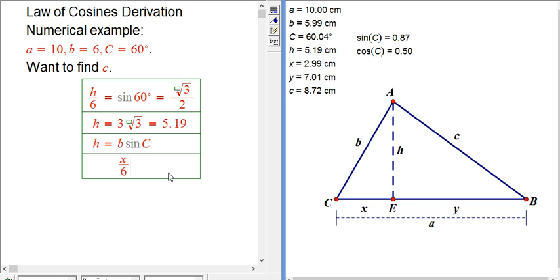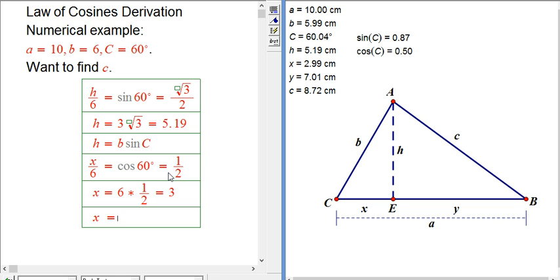So x over 6 is going to be cosine of 60 degrees. That happens to be 1 half in this case. And so x is 6 times 1 half, or 3. In general, x is just going to be b times cosine of c. That's good.